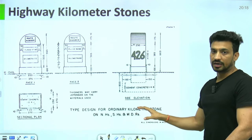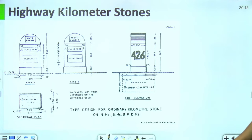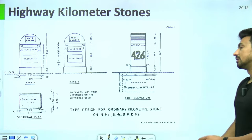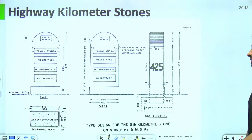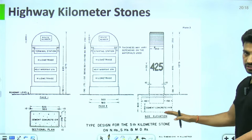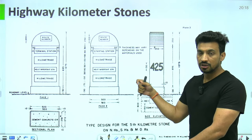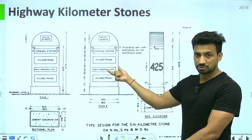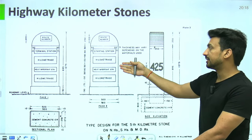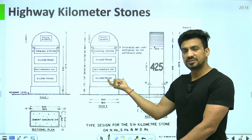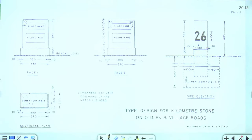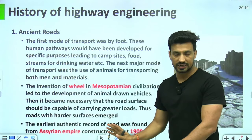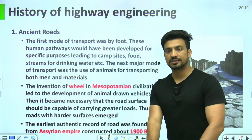Other district road और village roads के kilometer stone पर सिर्फ kilometerage और place का नाम देखने को मिलता है — कि कोई particular location कितनी दूर है।